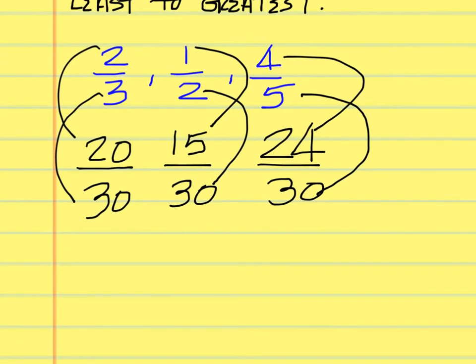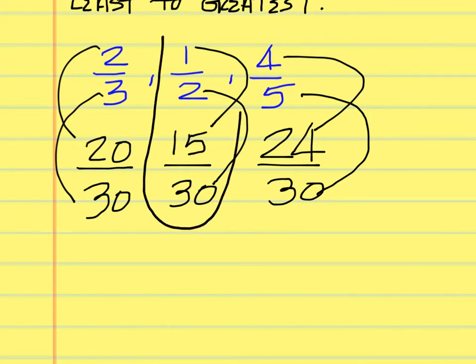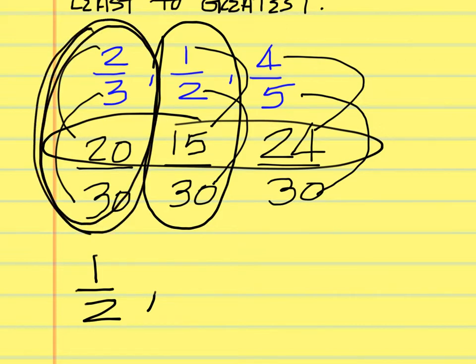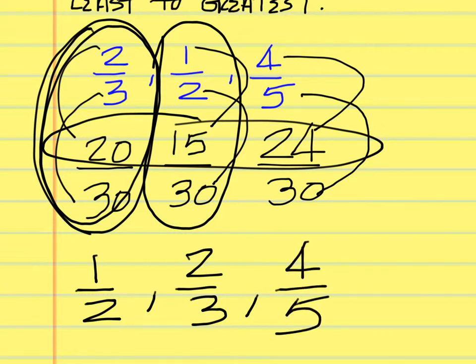Now use those equivalent fractions to put the original ones in order from least to greatest. What is the lowest number? 15 — and 15 pertains to one-half, so we write that first. What's the next highest? 20 — and 20 pertains to two-thirds, so two-thirds is next. Then of course we write the last one — four-fifths. In order from least to greatest: one-half, two-thirds, and four-fifths.